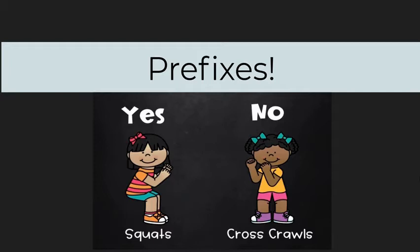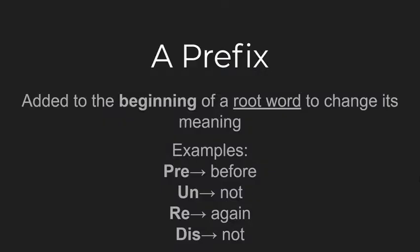Hey everybody, today we are going to review prefixes using our exercise movements. Our two movements are squats — that is when you bend your knees and bend down, kind of like you're sitting in a chair — and that will be the answer movement for yes. For the movement for no, you're going to do cross crawls. That is when you take your right elbow and your left knee and they touch each other, then you use your left elbow and bring up your right knee, and you alternate that movement.